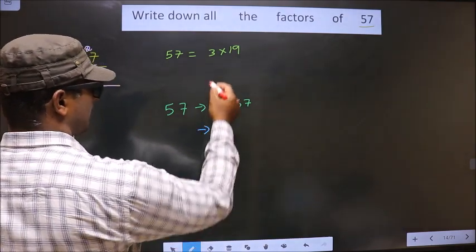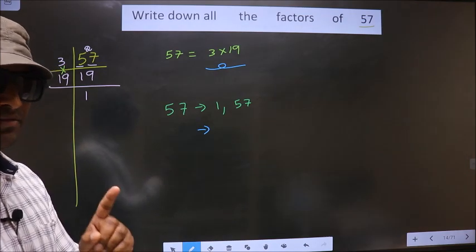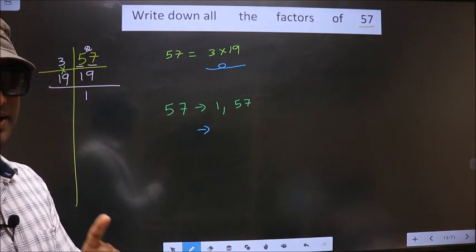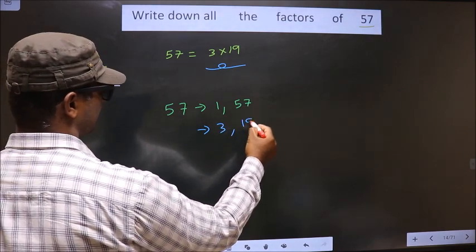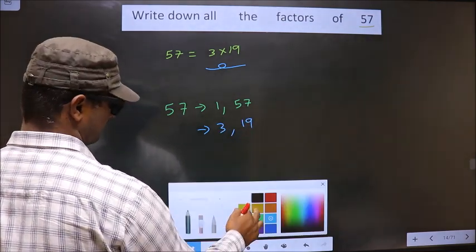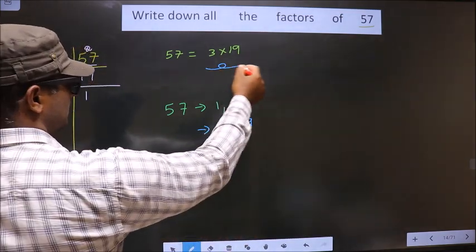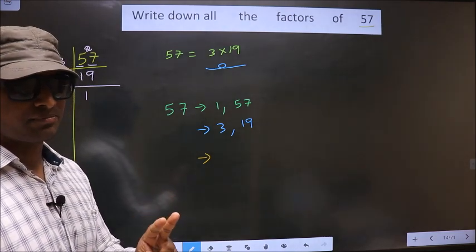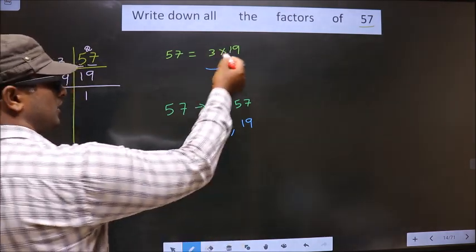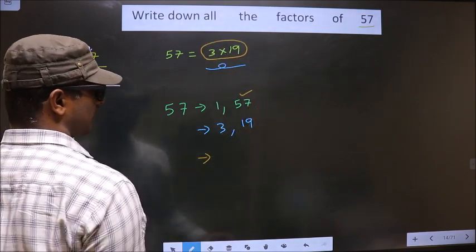Now, from these numbers, we should select two numbers at a time. There are only two numbers, so if we select both of them, we get 57 only.